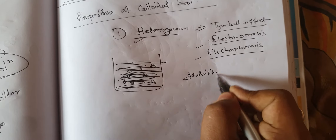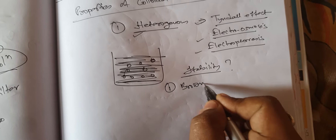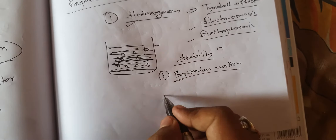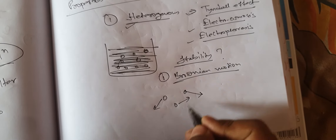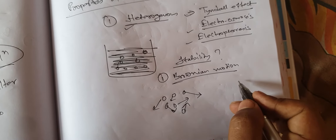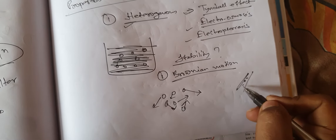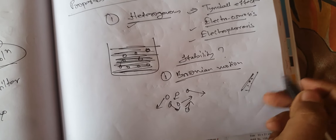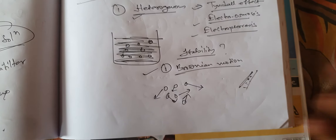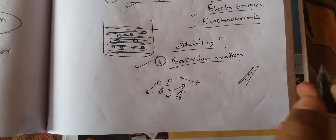Now, stability: why is there stability in colloidal particles? The first reason is Brownian motion. Brownian motion is the random movement of colloidal particles. This can be demonstrated by the dust particles you see moving around in the beam of light in a cinema hall during projection. This is an example of Brownian motion.